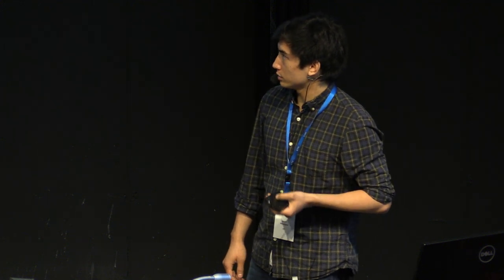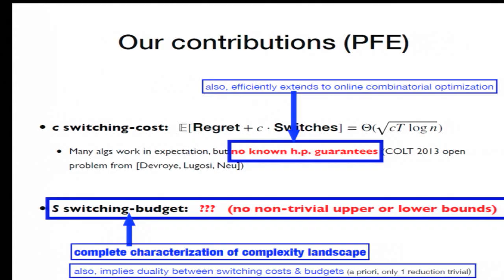The second contribution is a complete characterization of the complexity landscape of the switching budget problem. For both the experts and bandit problems, for all switching budgets, for both expectation and high probability guarantees, we have matching upper bounds and lower bounds for all these. And one nice corollary is that this implies a certain duality between the switching cost and budget settings. By which I mean if you give me a switching cost C, I can give you a budget S as a function of C, and the two problems have the same complexity. And the mapping is a bijection, so these two problems are really dual.